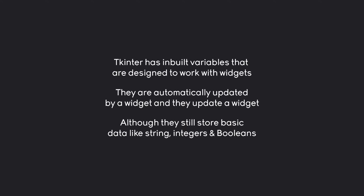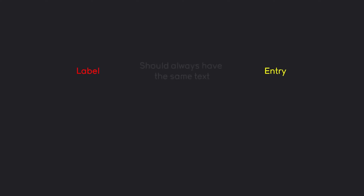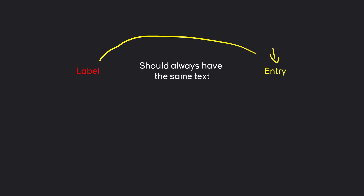I am primarily focusing on a string just to keep things simple. So far this probably doesn't make too much sense, so let me give an example. Let's say we have a label and an entry, and both of those should always have the same text. Whatever I am writing inside of the entry is also going to be the text of my label. Coincidentally, that is actually what we are going to make.